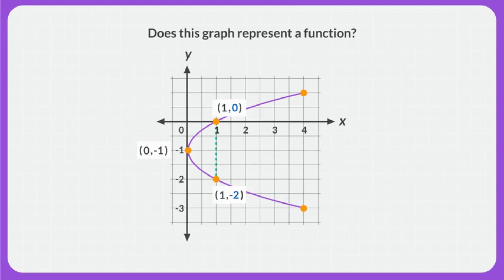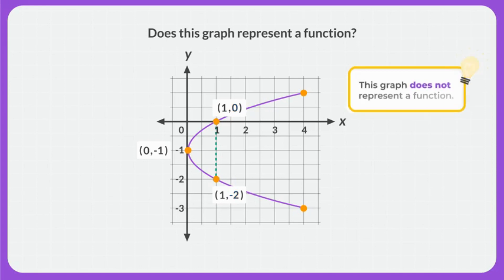I remember that in order to be a function, an input must have only one output. This means I don't need to check the rest of the points, because I already have my answer. This graph does not represent a function.